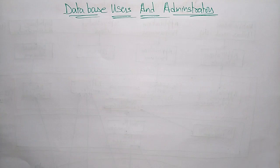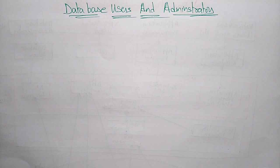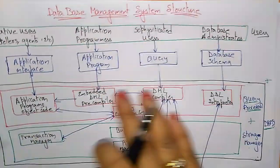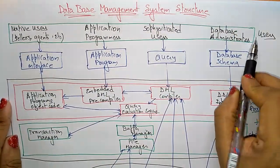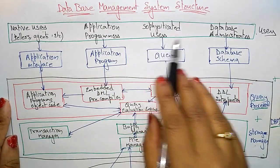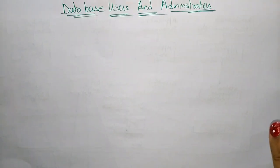Hi students. Coming to the next topic in the subject Database Management System is database users and administrators. In the previous video, when I was explaining about the database management system structure, we had seen database users — different users present there. These are the database users: native users, application programmers, sophisticated users, and database administrator. So let us see who the database users are.